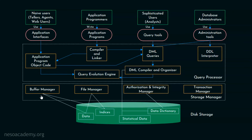Coming to the second one — the file manager — this is mainly for allocating the space on the disk storage. We know databases are already stored on the disk, and we may be inserting new data, deleting existing data, or updating existing data. This file manager is responsible for allocating the space on the disk storage and also managing the data structures used to represent information stored on the disk.